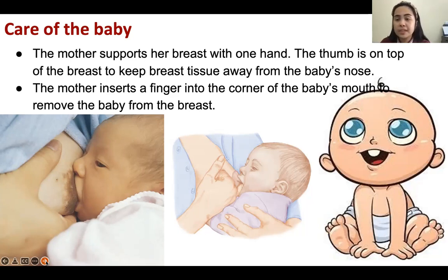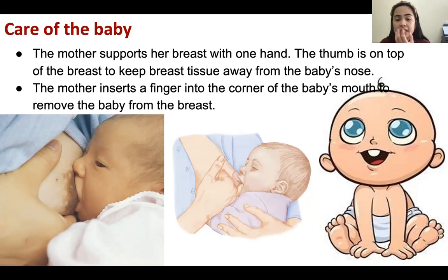You can tell if breastfeeding is effective — if the baby is doing it right — when all of the areola, the blackish-colored area around the nipple of the mother, is already fully inside the baby's mouth. That means it is an effective sucking or breastfeeding technique. The patient is doing it right.